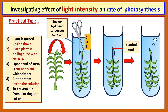Here again is the practical tip in the form of a flow chart, to make it clearer. Firstly, the plant is turned upside down. Then you place the plant in a boiling tube containing the sodium hydrogen carbonate solution. The upper end — the top part of the stem, which is actually the bottom part of the plant — is cut at a slant using scissors inserted into the sodium hydrogen carbonate solution. The cutting of the stem is done inside the solution.